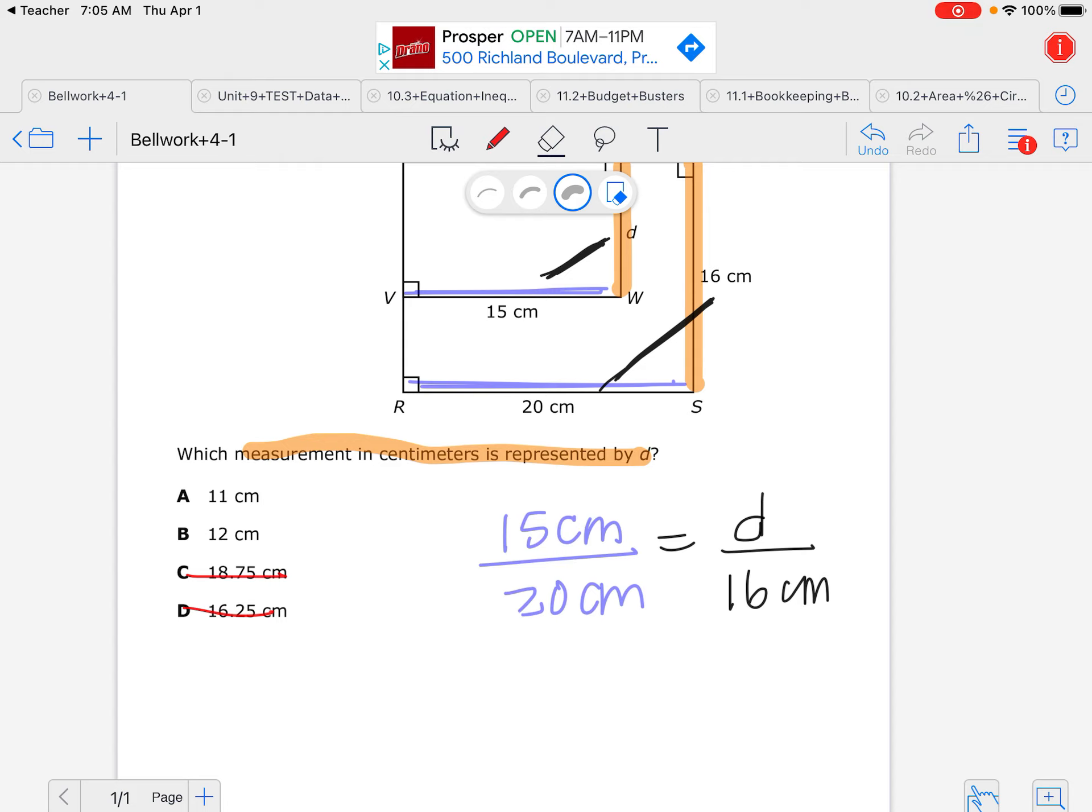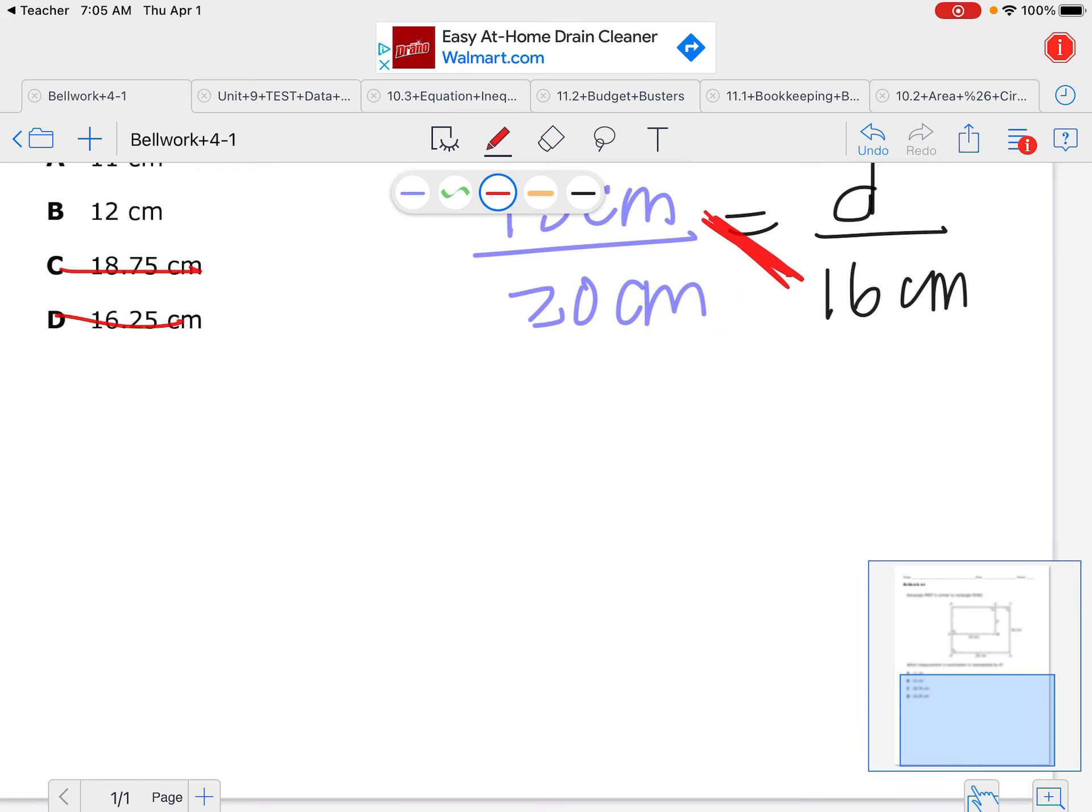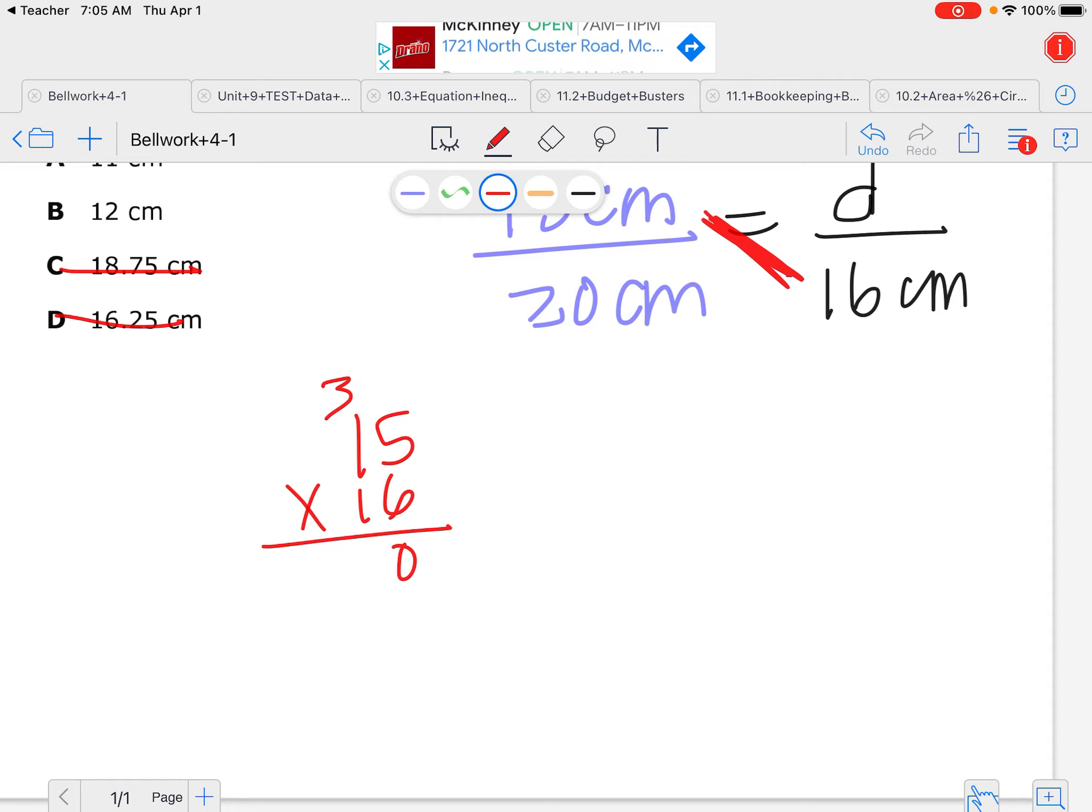Now to figure out if it's really 11 or 12, I would just cross multiply and divide. So I could cross multiply 15 times 16. 5 times 6 is 30. 6 times 1 is 6. 7, 8, 9. Placeholder is 0. And then 1 times 5 is 5, and 1 times 1 is 1. 9 plus 5 is 14. 1 plus 1 is 2.